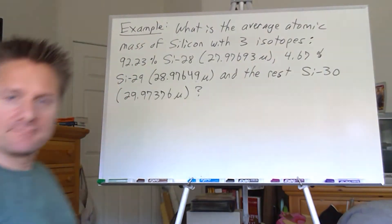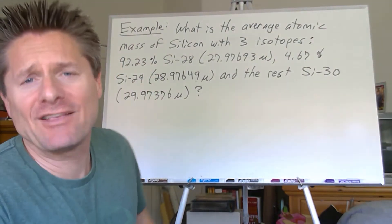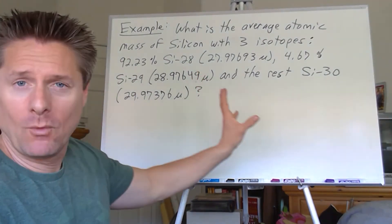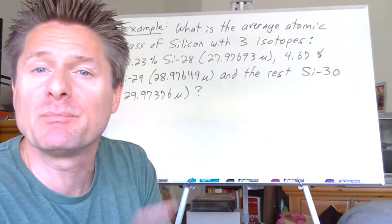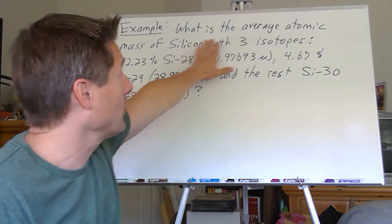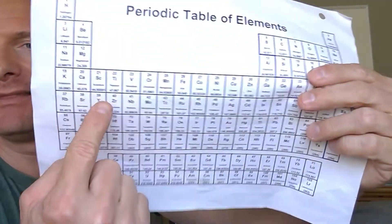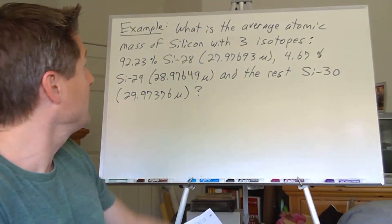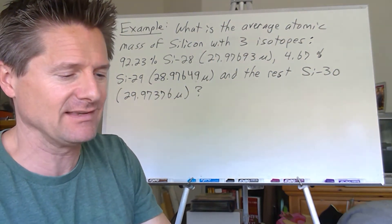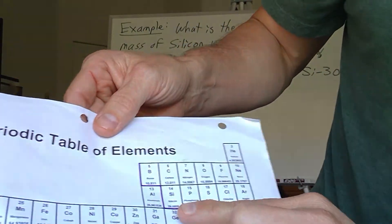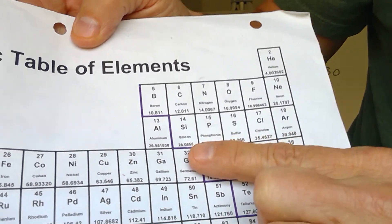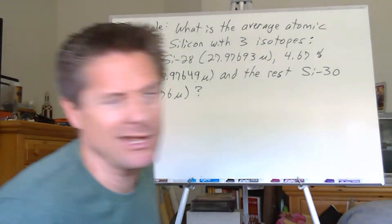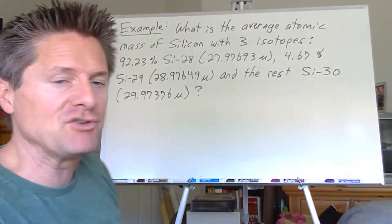There are two types of problems. Type one: calculating the average atomic mass, which should match the periodic table. For silicon, we should end up close to 28.0855. So we kind of know the answer ahead of time - we should get pretty close to that depending on uncertainty.